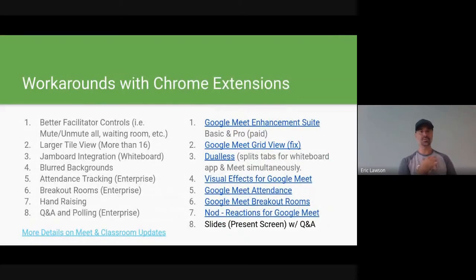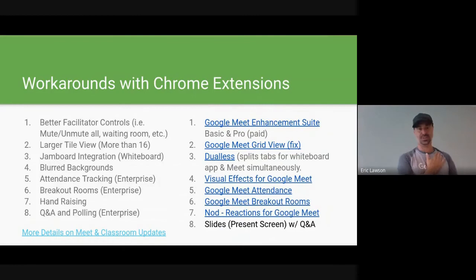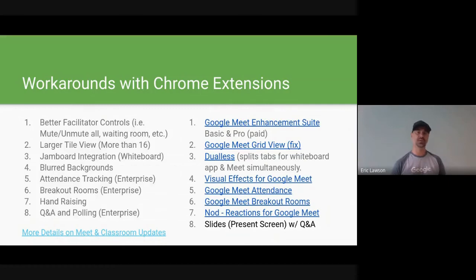Let's take a look at some of those workarounds. If you want better facilitator controls like muting and unmuting all and creating waiting rooms, there's a great Google Chrome extension called Google Meet Enhancement Suite. There's a basic version which is free, and then a pro version which is paid. I'll have this slide deck linked in the notes of this video.